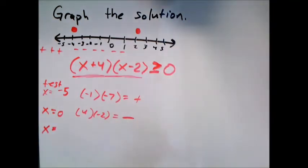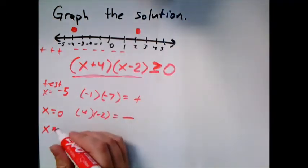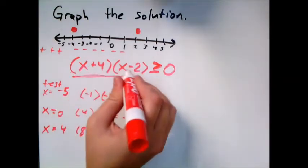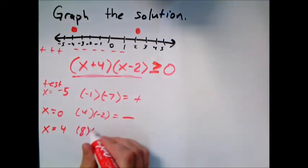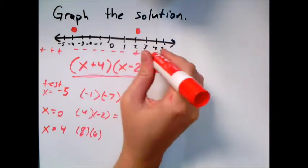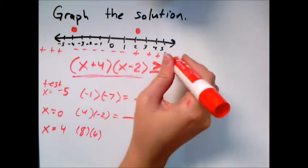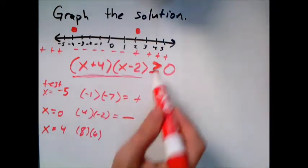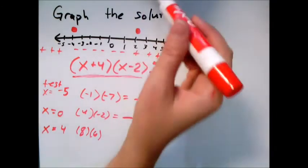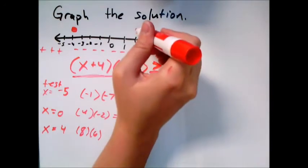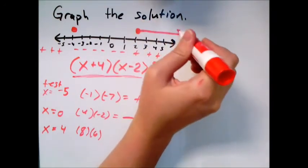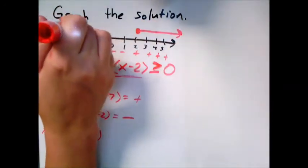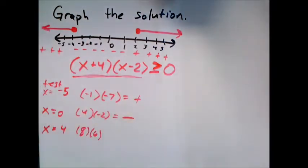Pick something bigger than two — say four. That gives eight times six, which is also positive. So I can answer the final question: when is it greater than or equal to zero? It's equal to zero at the endpoints, bigger than zero to the left of negative four, and also bigger than zero to the right of two.